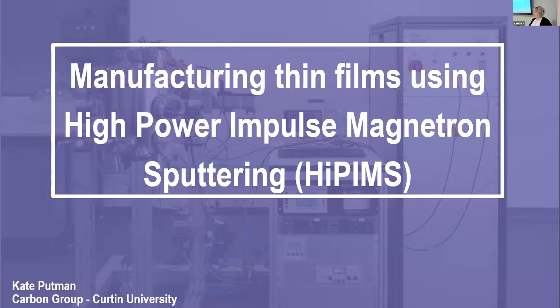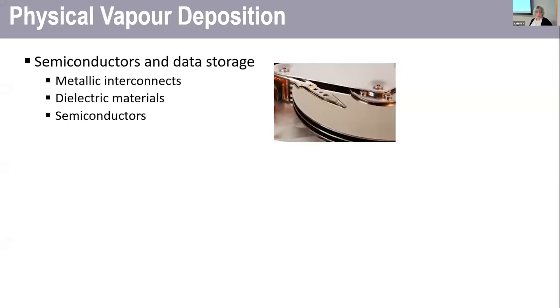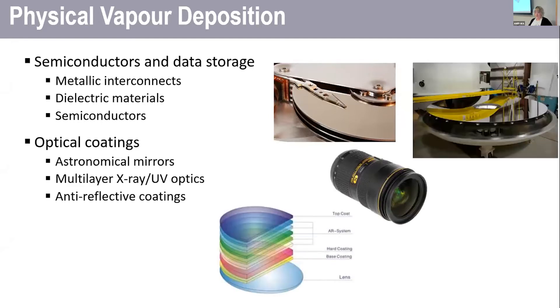For anyone unfamiliar with physical vapor deposition, I just want to show some commercial examples. So for semiconductors and data storage, the image here is a hard disk. It's also used in optical coatings.